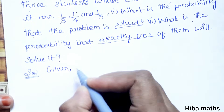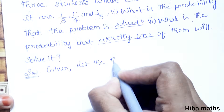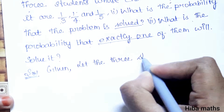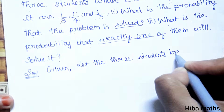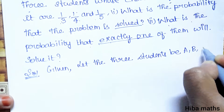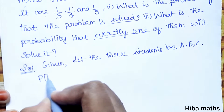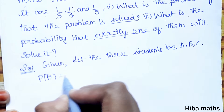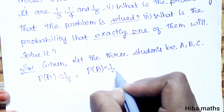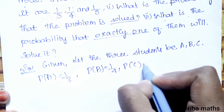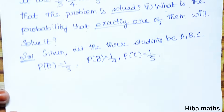We have three parts. Let the three students be A, B, C. P of A is 1 by 3, P of B is 1 by 4, and P of C is 1 by 5. Now the first condition is solved.